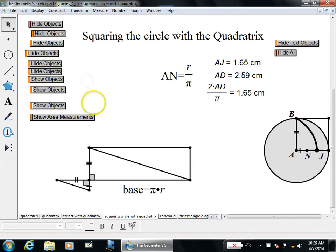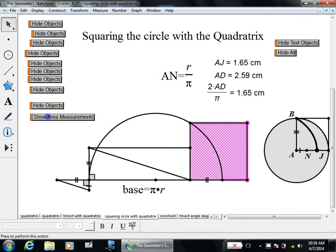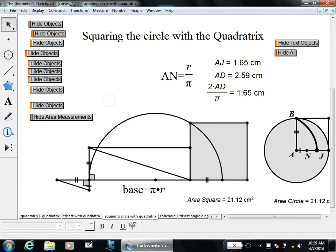If I fill this in, I have a rectangle whose area is π r squared. And then just like before I can square this rectangle, and that's how you can square a circle if you have a quadratrix.